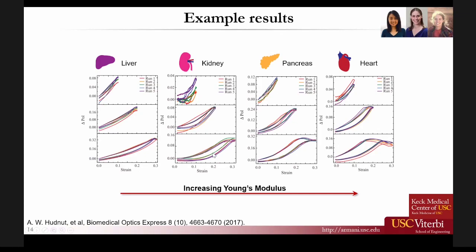These example results from different organs give you a sense of how all the tissue in our body has completely different viscoelastic responses when you apply force. The liver and kidney have a very simple response - the liver is very elastic. As you move into more complex materials like the pancreas and especially the heart, you begin to see more complex mechanical behaviors like buckling. We were able to develop a predictive model for the pancreas, but for the heart we were never able to get a really good predictive model for the little loop at the end of the curve.